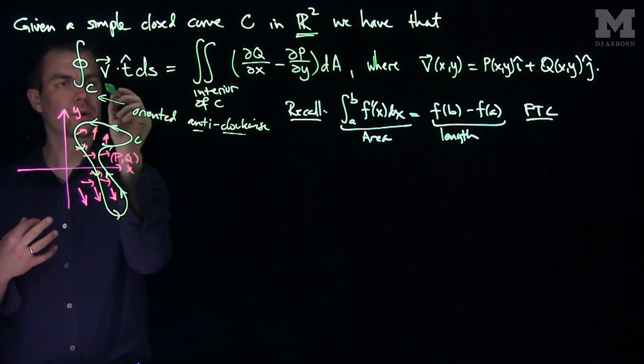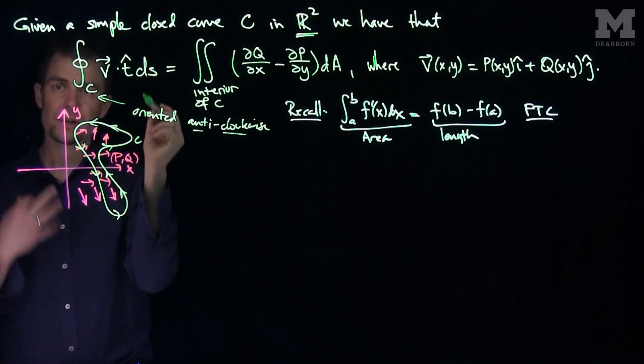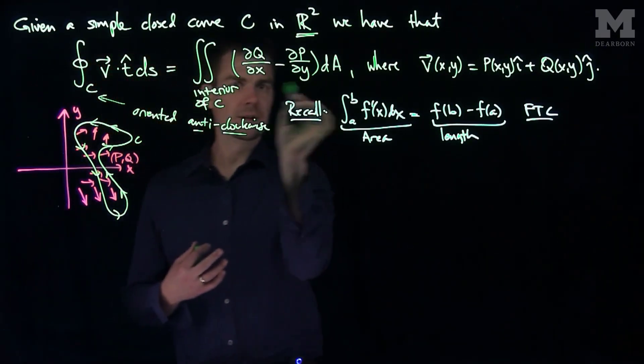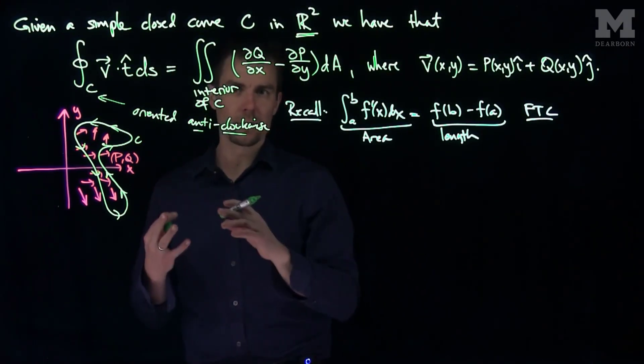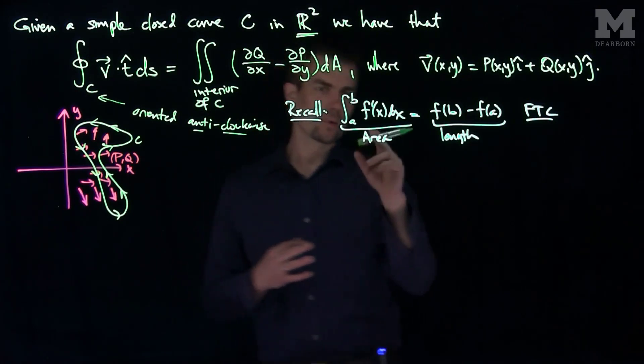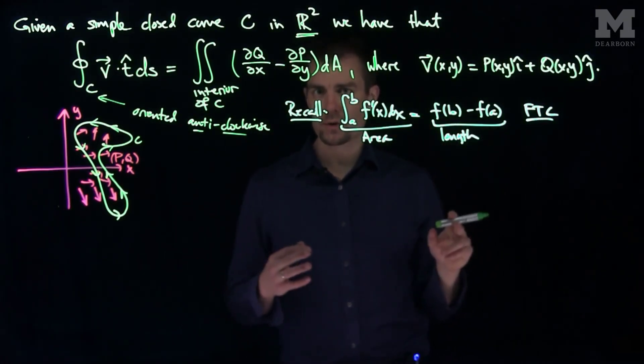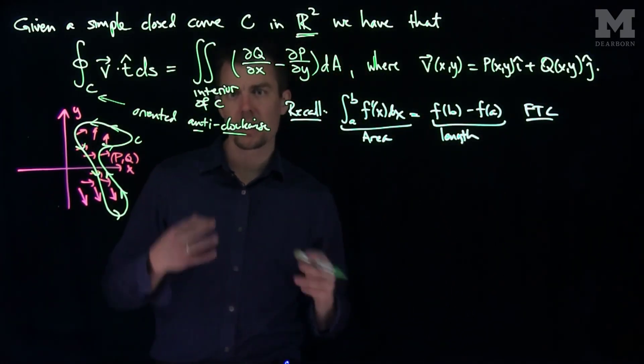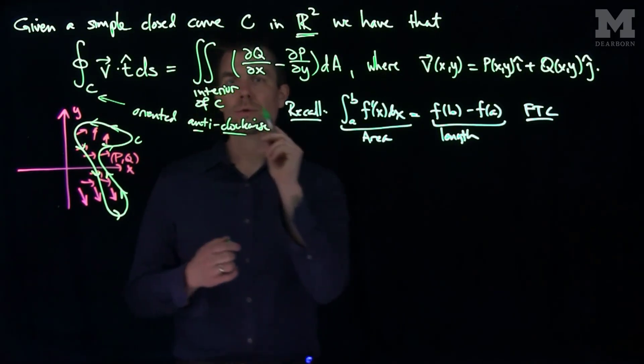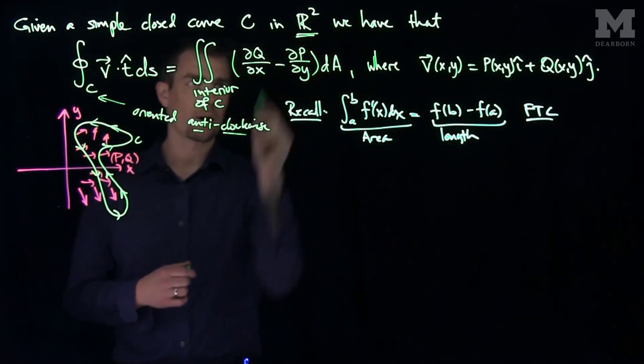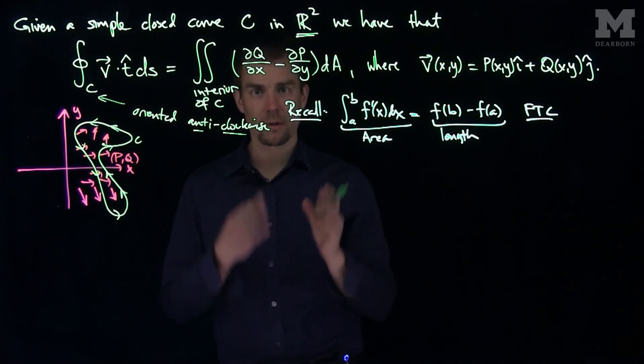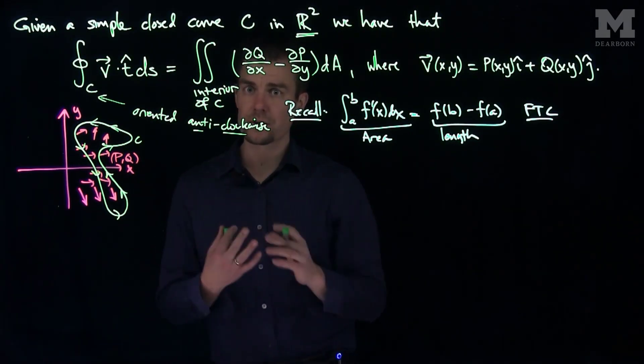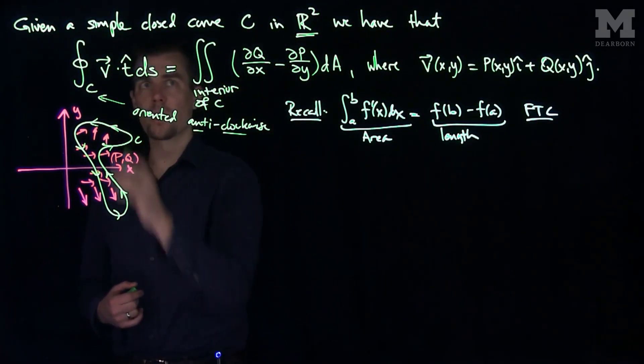So the fundamental theorem of calculus relates an area to a length. Over here, in some sense what we're doing is we're computing this flow integral which has the units of an area, and we're relating it to this double integral which has the units of a volume. So you're relating a three-dimensional thing to a two-dimensional thing, the exact same flavor as the fundamental theorem of calculus. It's a dimensional reduction technique, very powerful, but it's only true in the context of R². It's not true in R³ or R⁴ or R⁵ or higher dimensions.